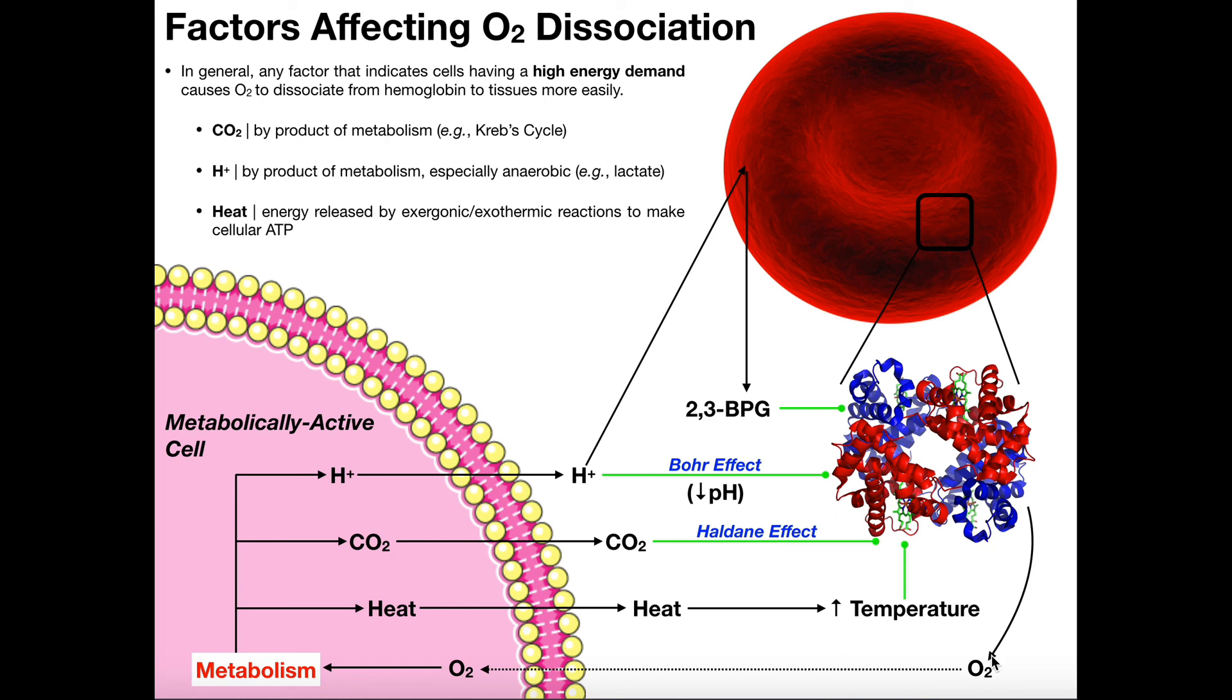But we've got four different effects here. Heat. We've got CO2 via the Haldane effect. Hydrogen ions via the Bohr effect. And the production of 2,3-BPG. And these are all mechanisms that metabolically active cells use to signal to red blood cells nearby that they need more oxygen. And remember the purpose of oxygen. It's so the cell can perform oxidative metabolism, generate ATP, and do work.